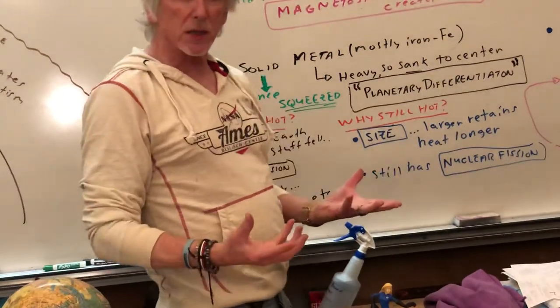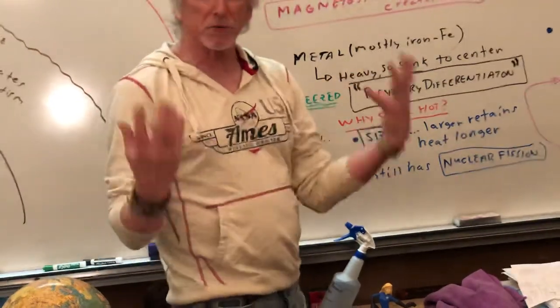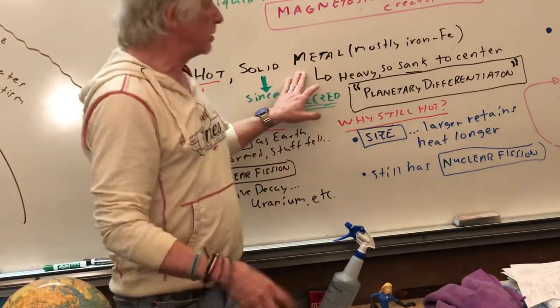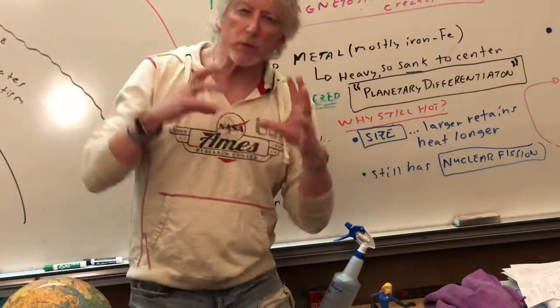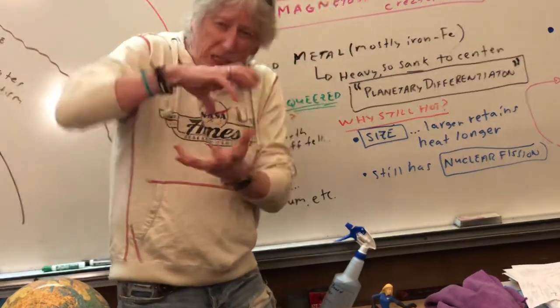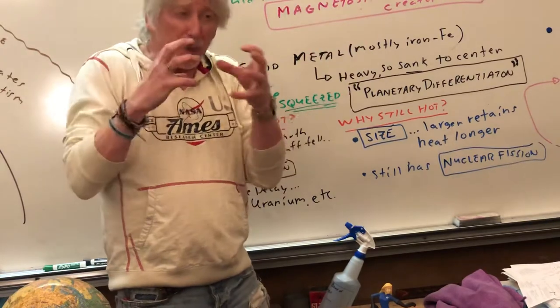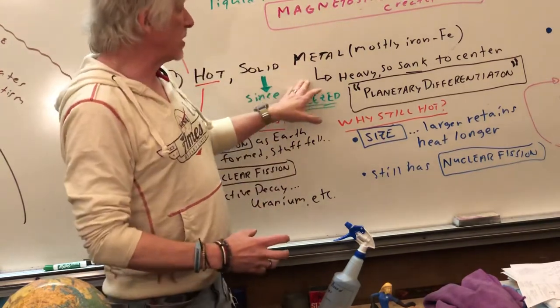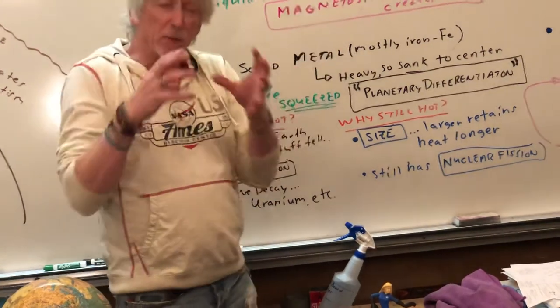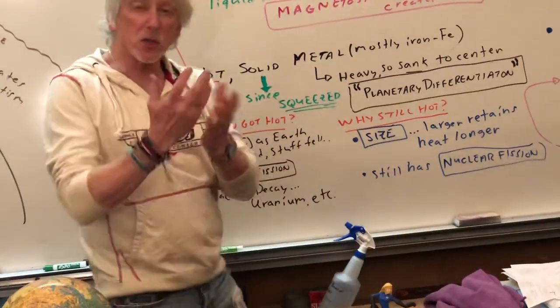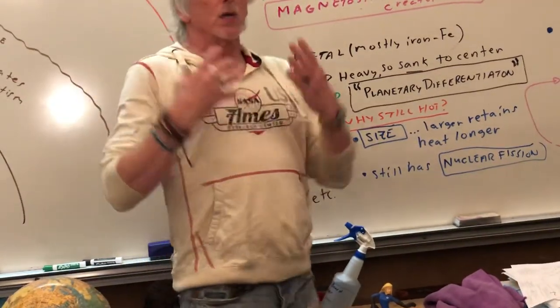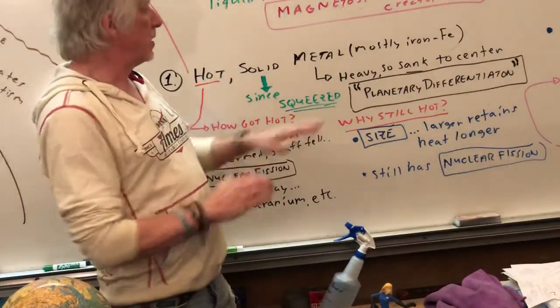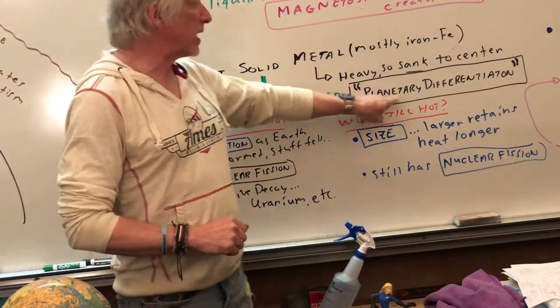The atmosphere wasn't always like this. There weren't always mountains. So why is there metal in the middle of Earth? Well, because as Earth formed, the heavy stuff, really the more dense, more packed in stuff, sank to the center. This is called planetary differentiation. Dense stuff sank to the middle.